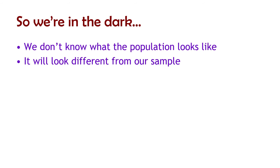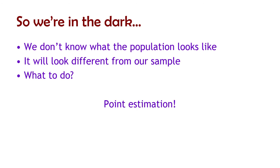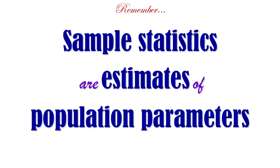Descriptive statistics are nice, but we really wish we had descriptive statistics about the entire population. We really wish we knew the mean and the standard deviation of the entire population, not just a little piece of it. So we try to guess. The process of trying to guess exactly what a specific parameter is - whether that's a mean, standard deviation, or something else - by using a sample statistic, is called point estimation. Sample statistics are estimates of population parameters. If you've got nothing else, your best guess is that whatever you have in your sample is what you have in the population. Now you know you're wrong, but what else do you have to go on?